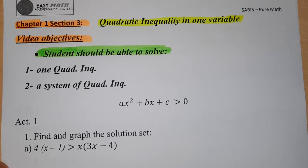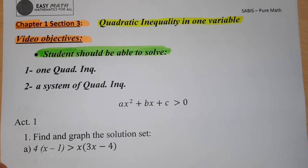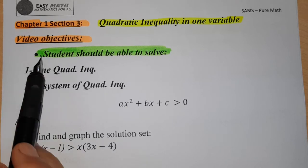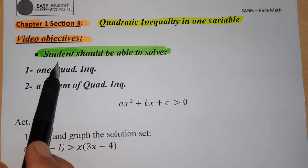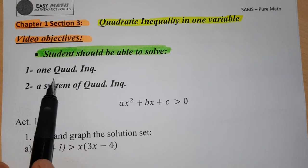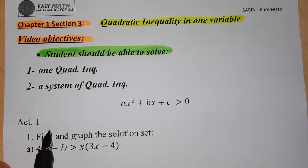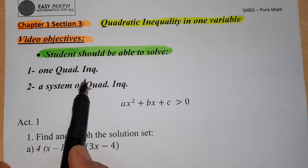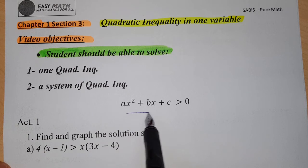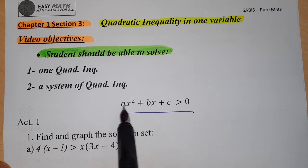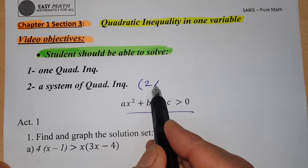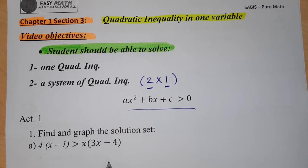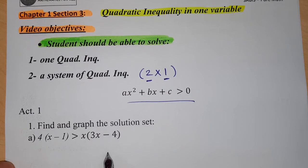Hello everyone, welcome back to Algebra: Quadratic Inequality in One Variable, Chapter 1, Section 3. Today I have only two objectives: the student should be able to solve one quadratic inequality in a given form, or a system of quadratic inequalities — that means two inequalities in one unknown. Let me start directly.